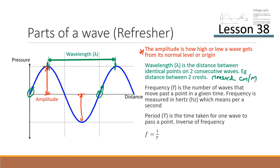Frequency, or F, is the number of waves that move past a point in a given time. It's measured in Hertz, which means per second. We talked about this in Lesson 38 — in AC electricity, the frequency is 50 Hz, meaning 50 waves pass the starting point every second. Period, T, is the time taken for one wave to pass a point. It's the inverse of frequency and is measured in seconds.